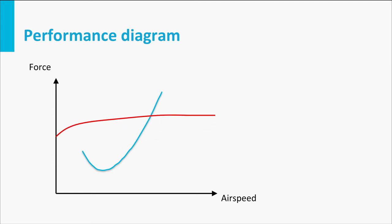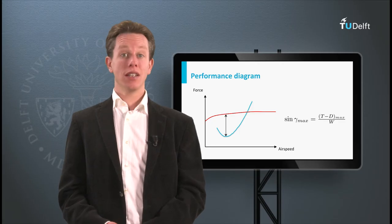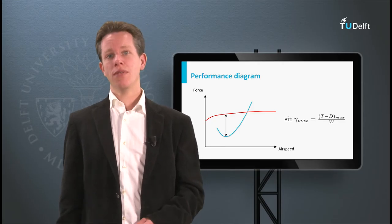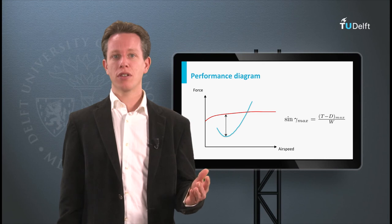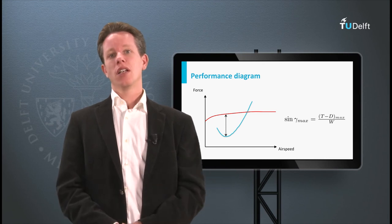If we have this diagram for an aircraft, it is possible to determine graphically where the curves are furthest apart. In this particular example, that is right here. If we measure the difference from this figure and divide it by the aircraft weight, we will find the sine of maximum climb angle. That is fairly easy, isn't it? We have the aerodynamic and propulsion characteristics of the aircraft. However,